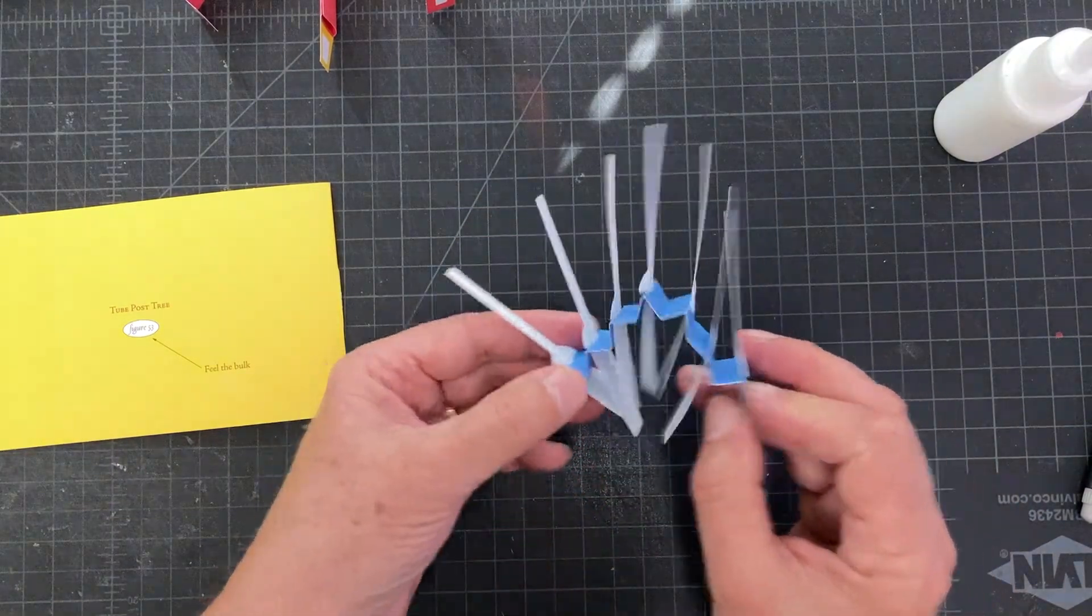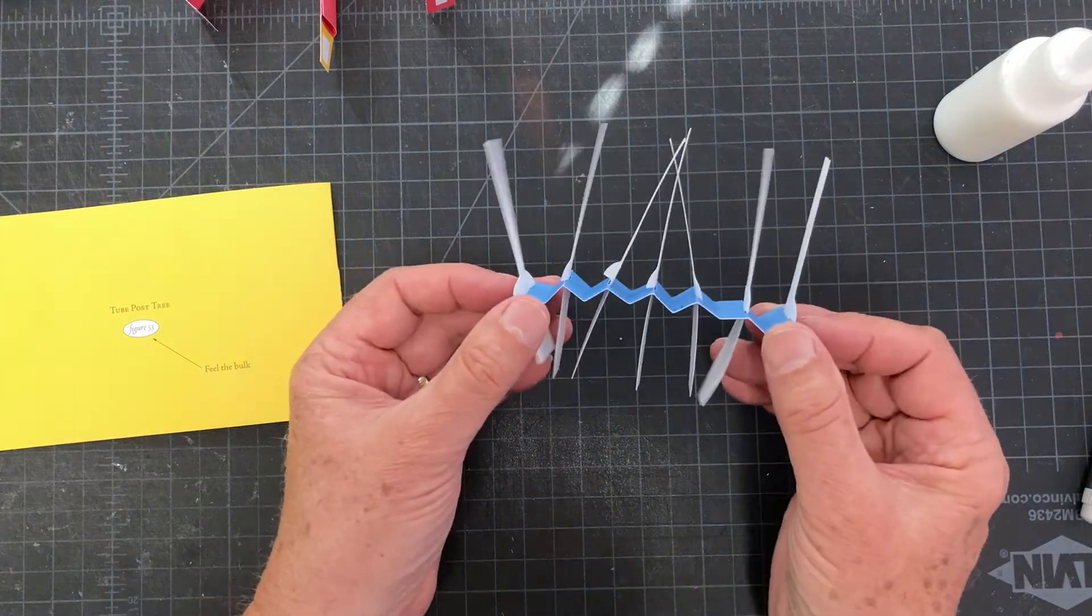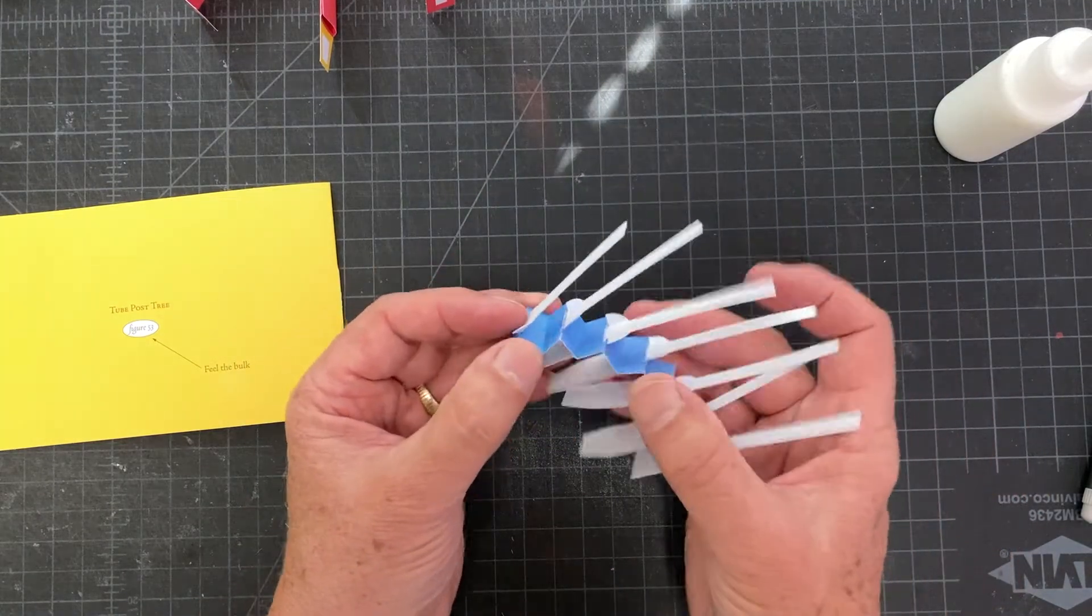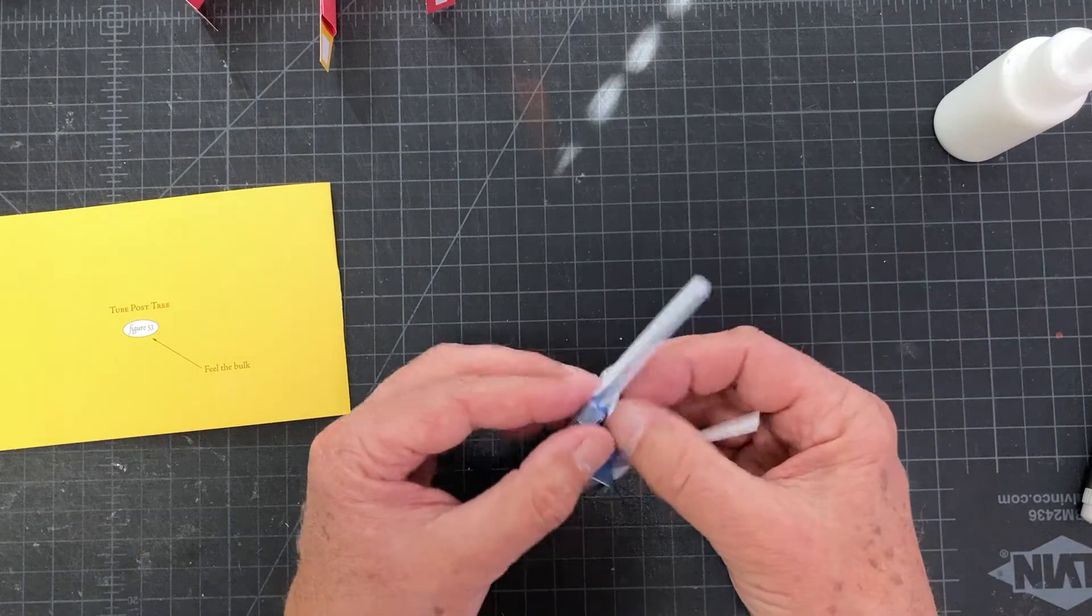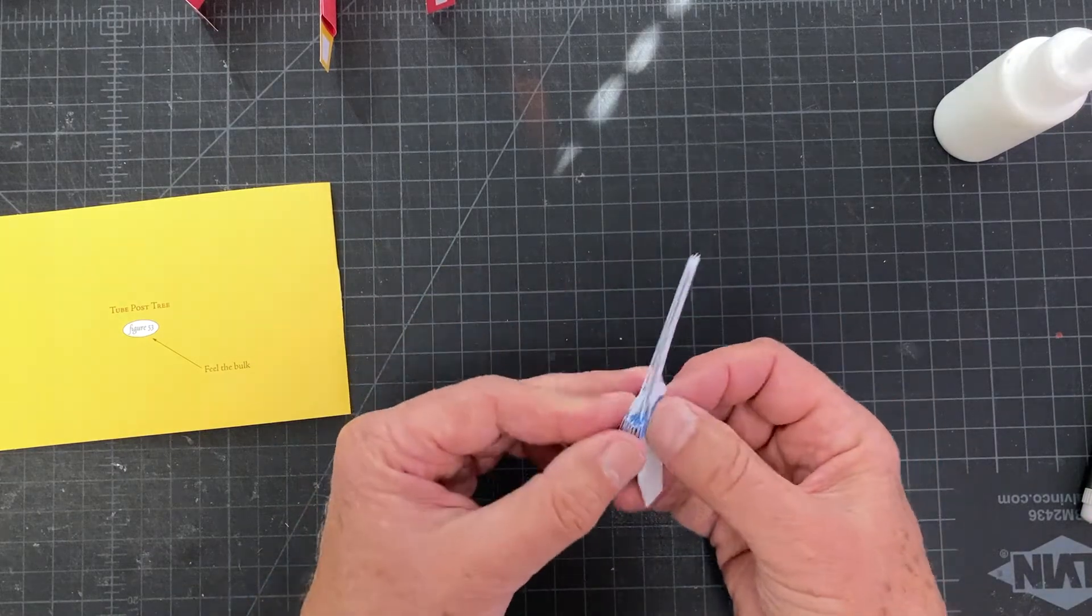There we go. All right, so there are the branches of the tree, basically, with the accordion fold. So fold the accordion fold back in position like this.